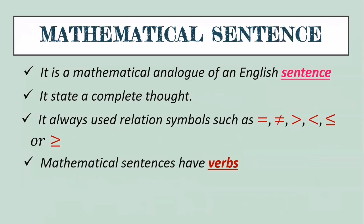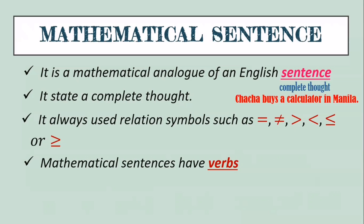Now versus mathematical sentence — what is a mathematical sentence? It is a mathematical analog of an English sentence. When we say sentence, it should express a complete thought. An example of an English sentence is: 'Cha-cha buys a calculator in Manila' — it has a complete thought with a subject and a verb. A mathematical sentence also states a complete thought.